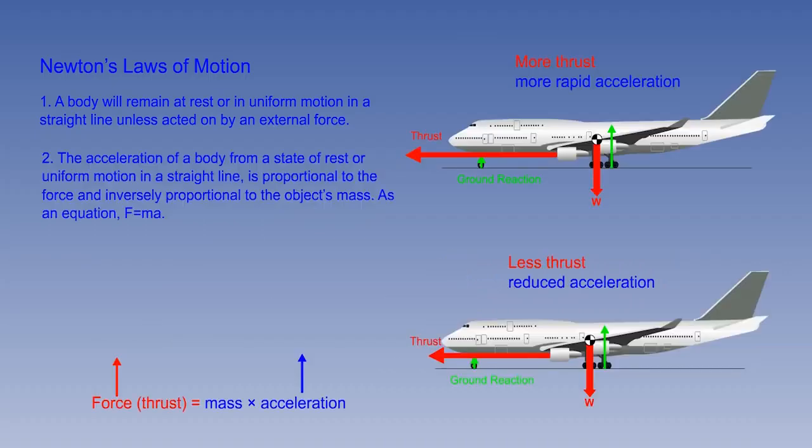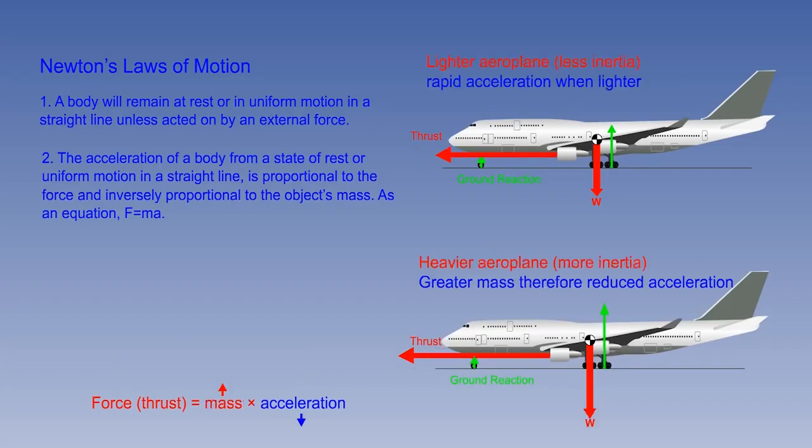Newton's second law shows that when a force is applied to a body, its acceleration is proportional to the size of the force, and inversely proportional to the object's mass, because a heavier object has more inertia. Newton's second law has obvious implications on take-off, as the aeroplane must accelerate to reach its take-off speed, and will do so quicker if the engine thrust is greater, or if the aeroplane has less inertia, because it is lighter.